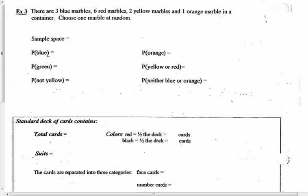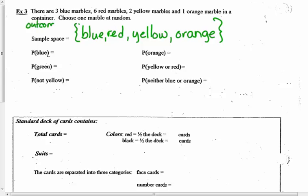There are 3 blue marbles, 6 red marbles, 2 yellow marbles, and 1 orange marble in a container. Choose 1 marble at random. The sample space is blue, what can you get, red, yellow, not how many, what? The sample space is what? An orange. So you can get blue marbles, red marbles, yellow marbles, or orange marbles. How many, what is the outcomes, how many outcomes, if it asks that question? Well, we've got to add those all up. 3 and 6 is 9, and 2 is 11, and 1 is 12. So the outcomes is 12.